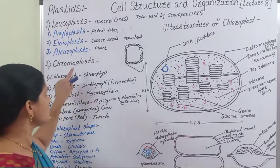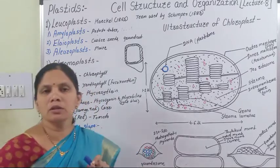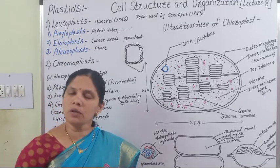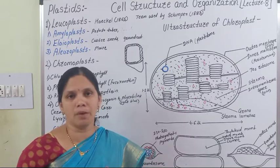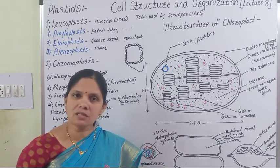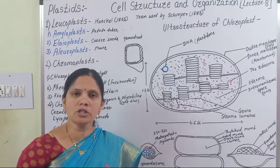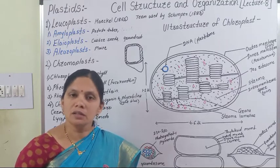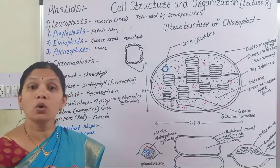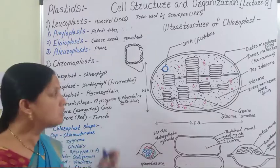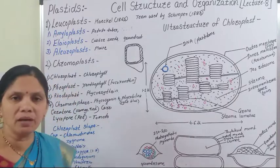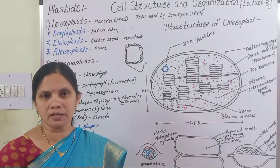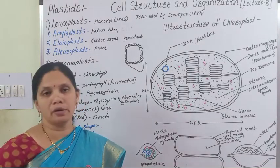The next plastid is the Chromoplast. Chromoplasts are colored plastids — plastids in which colored pigments are present are known as Chromoplasts. Depending upon which pigment is present, they are of different types.